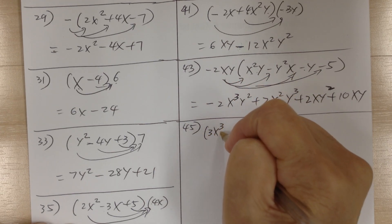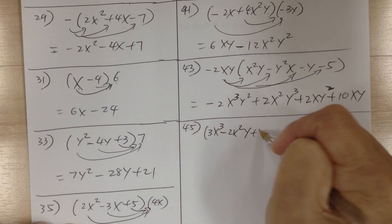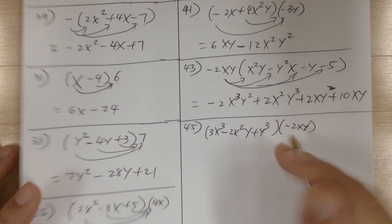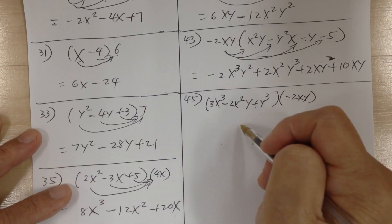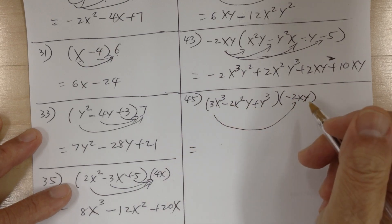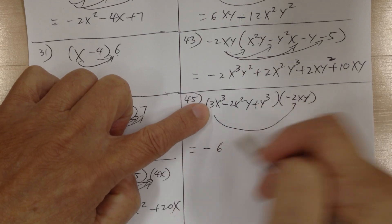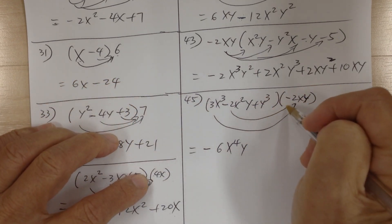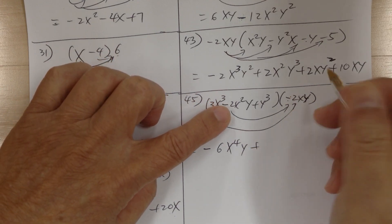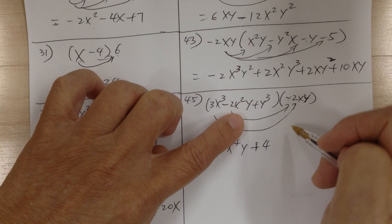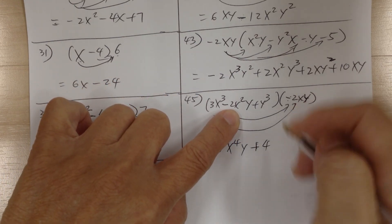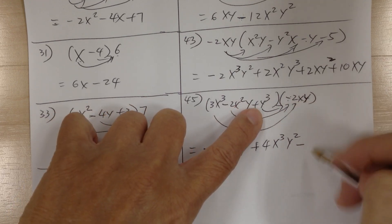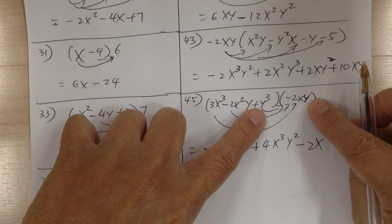Number 45. You have (3x to the 3 minus 2x squared y plus y to the 3) times negative 2xy. Distribute: sign is negative, number is 6, alphabet gives x to the 4 and y, so minus 6x to the 4 y. Next: negative and negative is positive, 2 times 2 is 4, alphabet gives x to the 3 and y squared, so plus 4x to the 3 y squared. Next: sign is negative, number is 2, alphabet gives x and y to the 4, so minus 2xy to the 4.